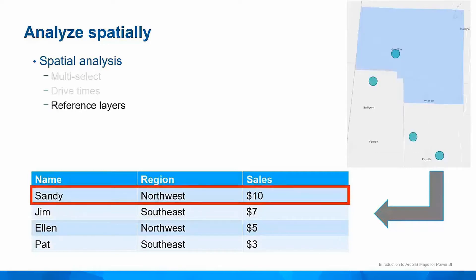Another way to make spatial selections is by using reference layers. Reference layers are hosted by Esri and provide additional geographic information about an area. You can use Esri-created demographic reference layers or any other publicly shared layers on our ArcGIS content platform. Reference layers can show common geographic boundaries, such as in this example where Marion County, Alabama is shown in blue. When used to make a spatial selection, the Marion County area would select Sandy, the one sales rep that lives within the county.